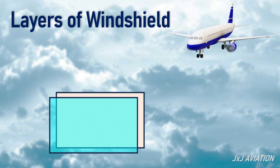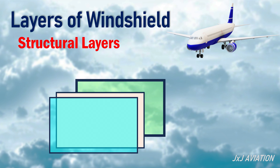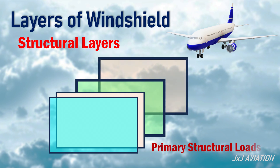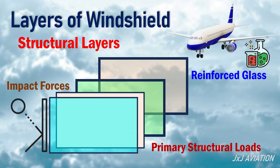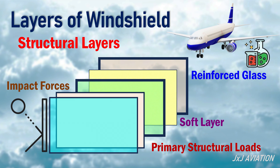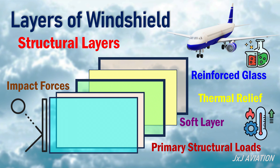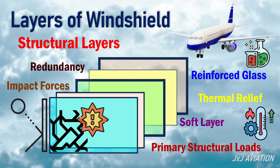After this layer, there are structural layers in the windshield. These layers withstand the primary structural loads and the impact forces. The layers are made up of chemically reinforced glass with a thin soft layer between them. This thin layer provides thermal relief to the surrounding layers. These layers provide redundancy in case of damage to the outer pane, and also withstand the pressure differences inside and outside the aircraft.